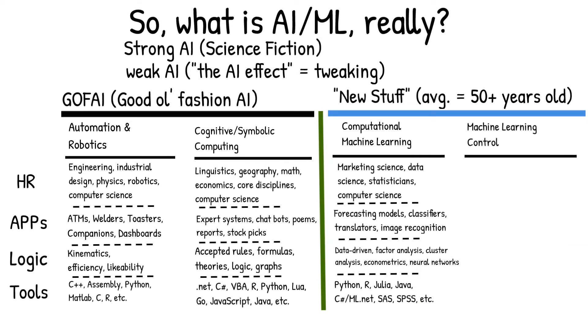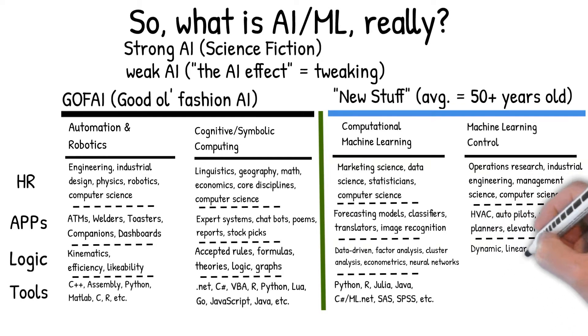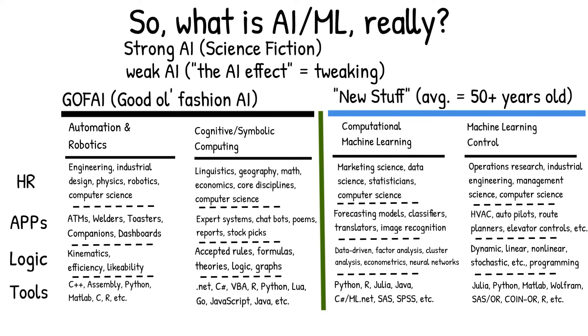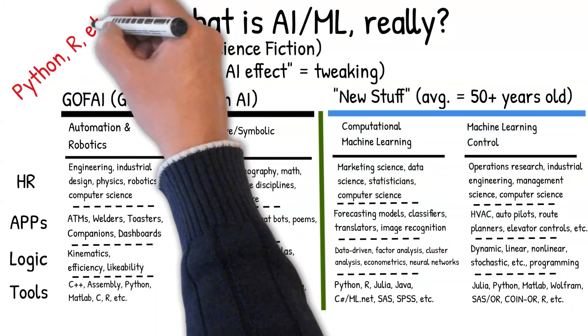The last area, machine learning control, is also quite old but very important. Imagine you want to have a system that automatically minimizes costs or maximizes profits. This has been dominated by people with backgrounds in operations research, industrial engineering, management science, and computer science. It is used all over industries for air conditioning systems, autopilots, etc. This area relies on hard mathematical formulations, typically in the form of dynamic, linear, integer, or geometric programming. If you look closely, you'll notice that Python and R are across all four branches of artificial intelligence, hence their popularity.